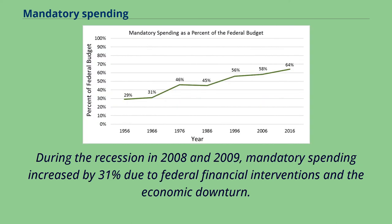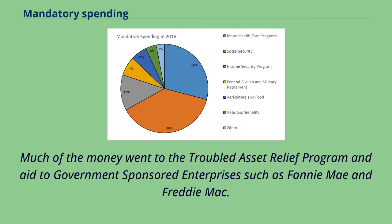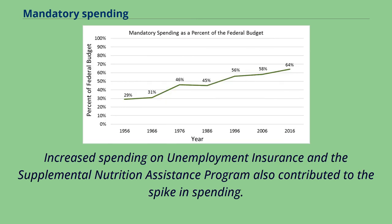During the recession in 2008 and 2009, mandatory spending increased by 31% due to federal financial interventions and the economic downturn. Much of the money went to the Troubled Asset Relief Program and aid to government-sponsored enterprises such as Fannie Mae and Freddie Mac. Increased spending on unemployment insurance and the Supplemental Nutrition Assistance Program also contributed to the spike in spending.